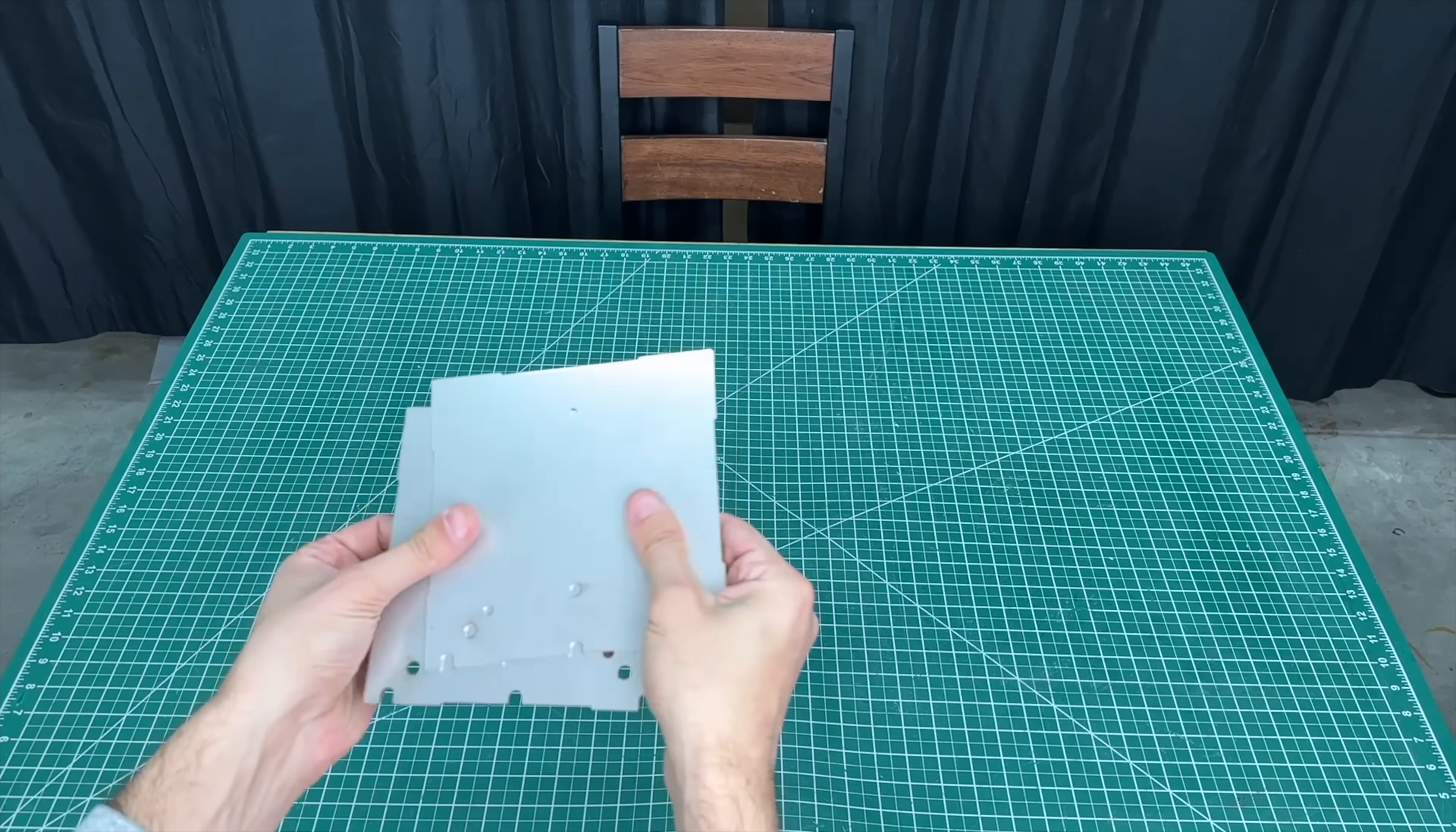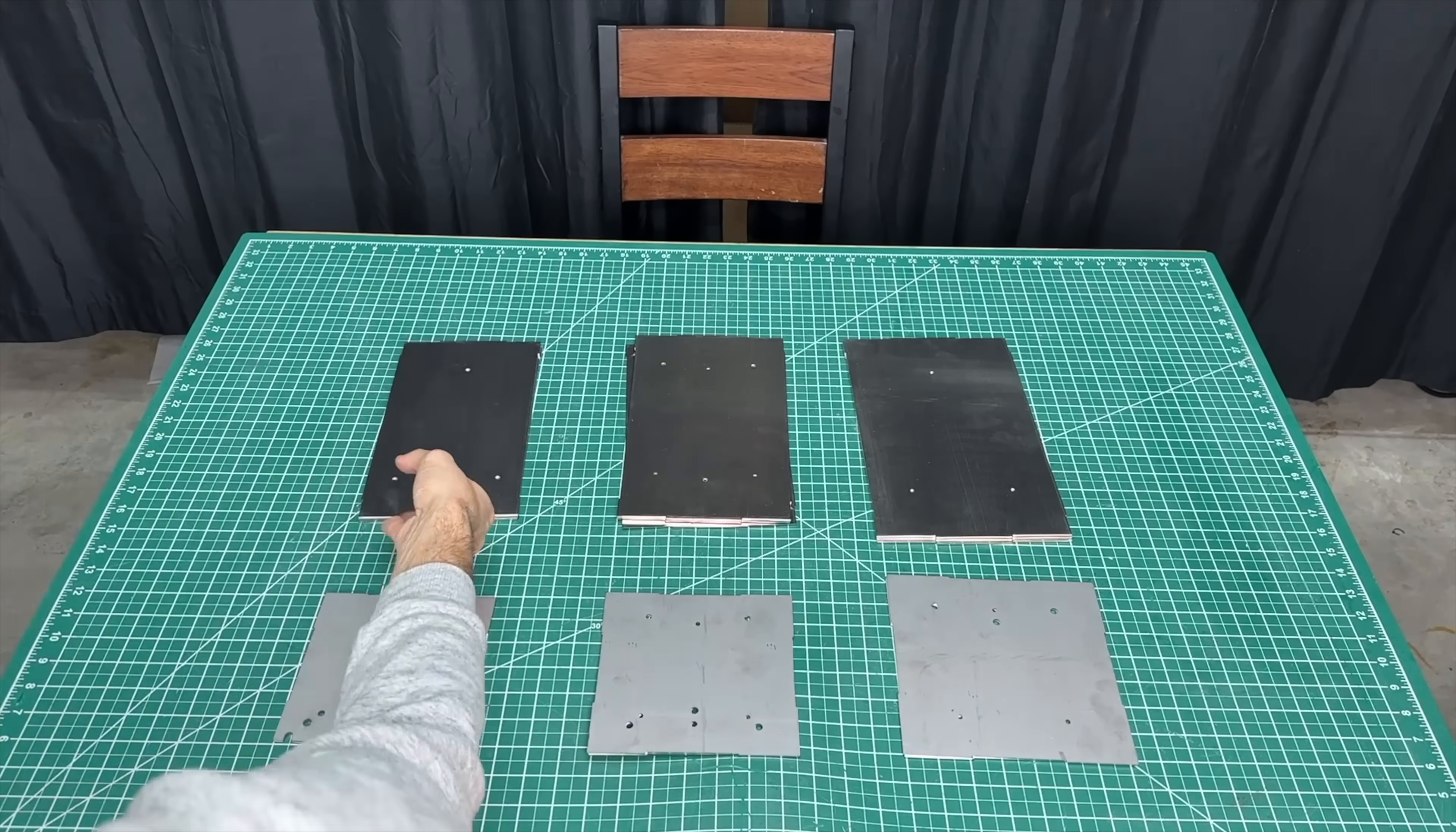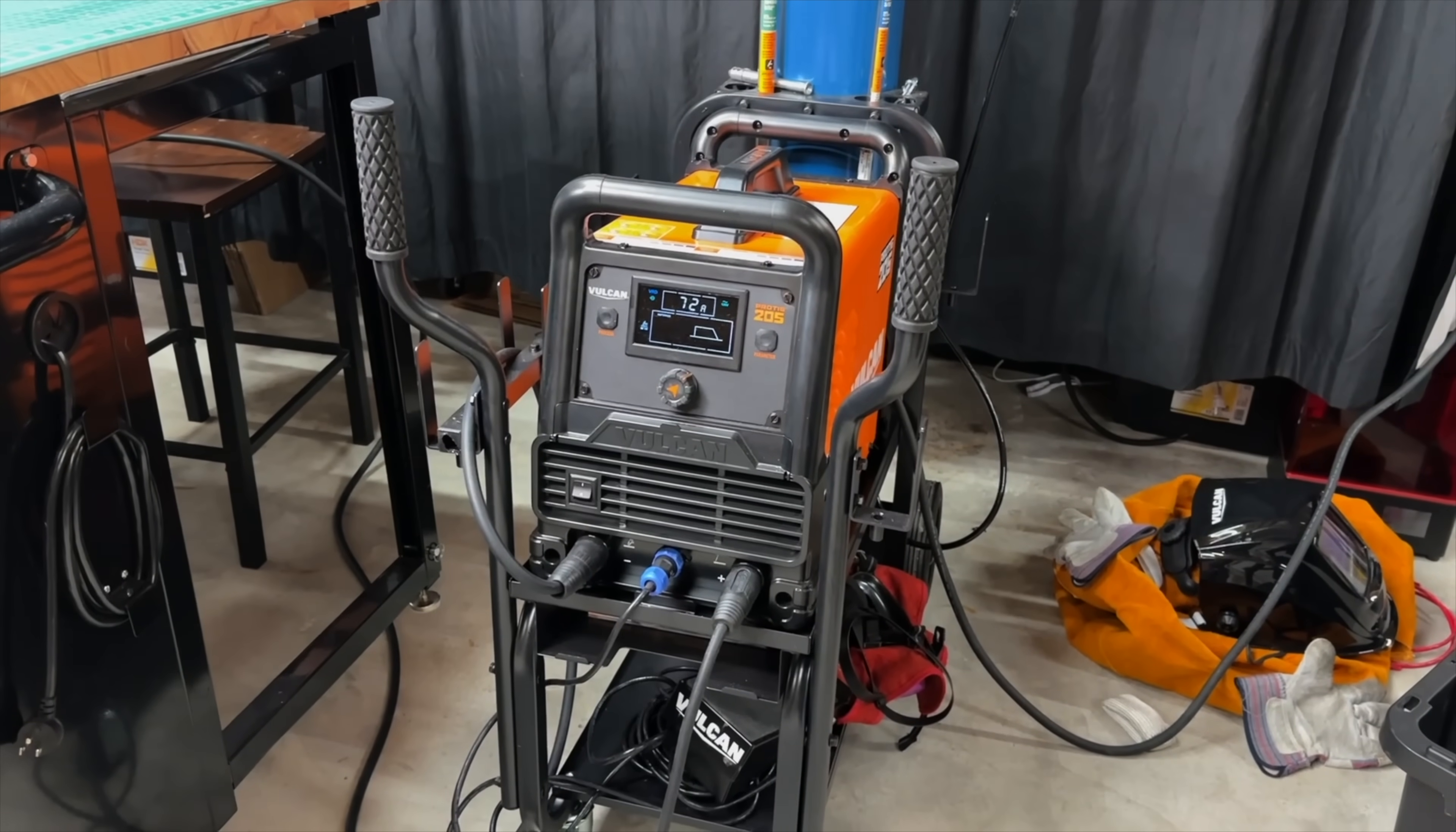These are all cut out of 304 stainless steel and after we had three layers of all six sides of the box, we were ready to pull out that welder again, which I'm so bad at using.